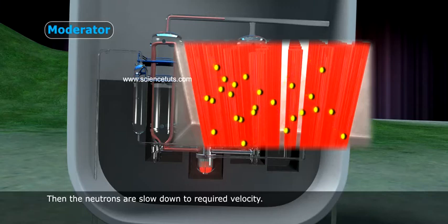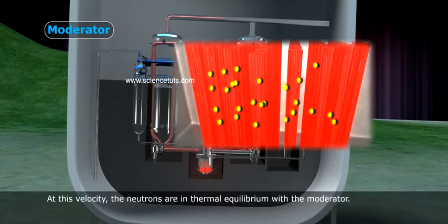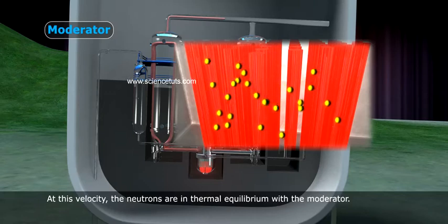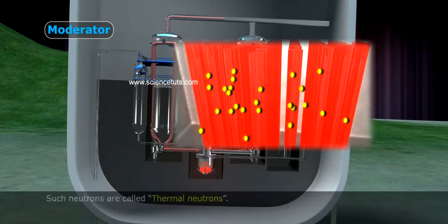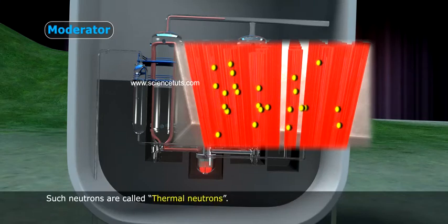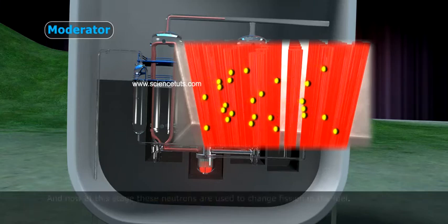Then the neutrons are slowed down to required velocity. At this velocity the neutrons are in thermal equilibrium with the moderator. Such neutrons are called thermal neutrons.